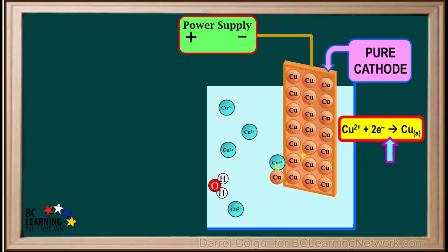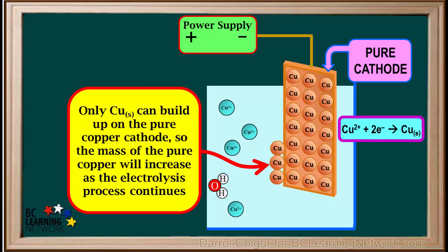This process will continue. And Cu 2 plus ions continue to be reduced to neutral copper atoms, as more ions come in from the anode where they are formed. We see that only copper metal is produced and builds up on the pure copper cathode, increasing its mass.